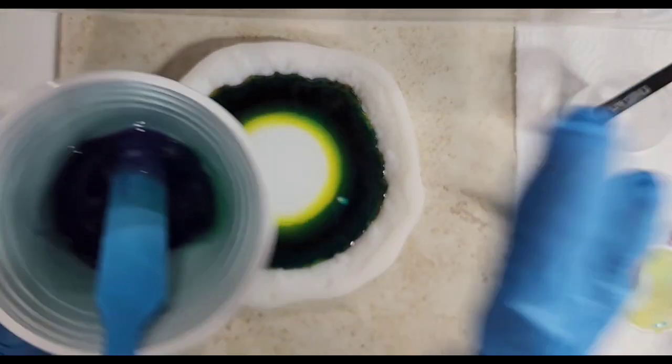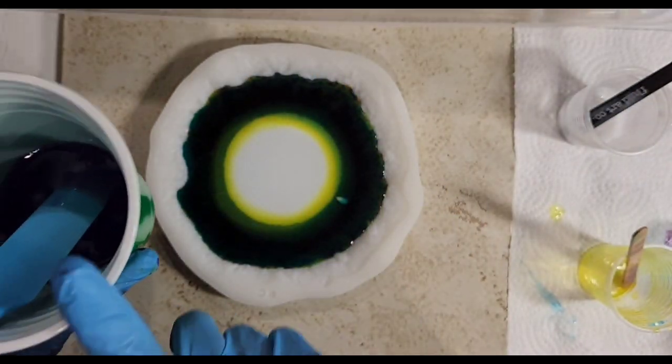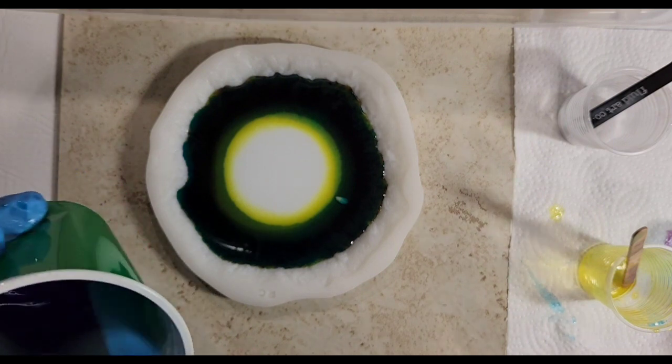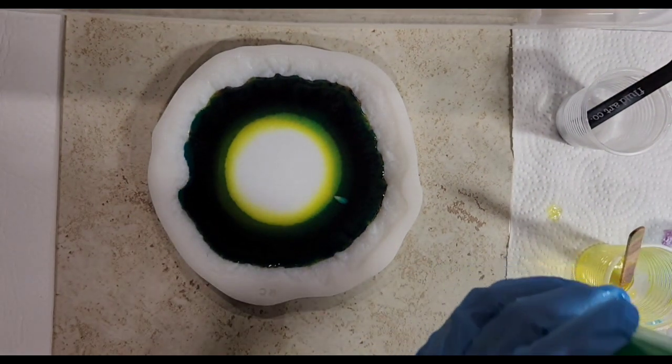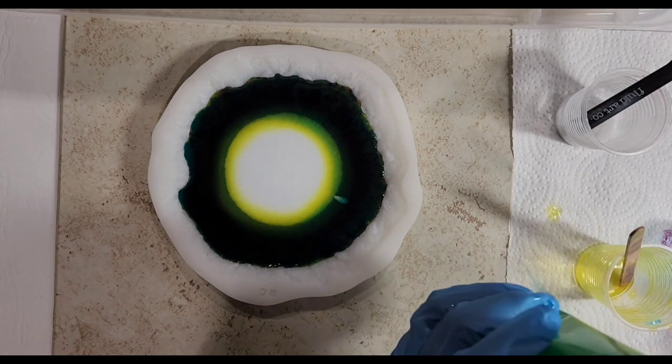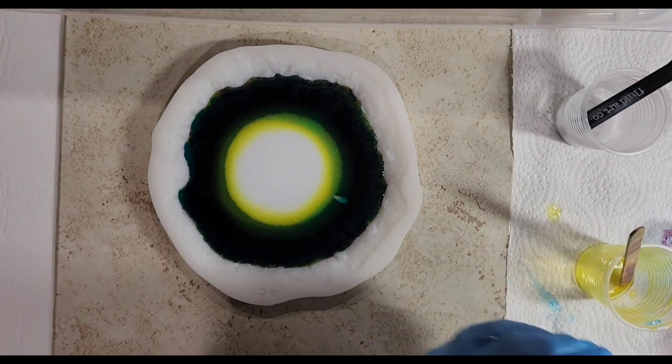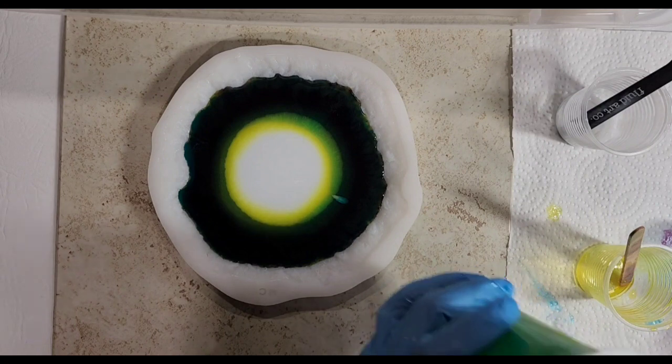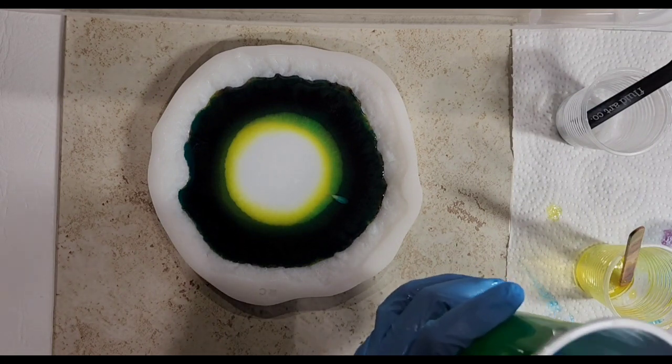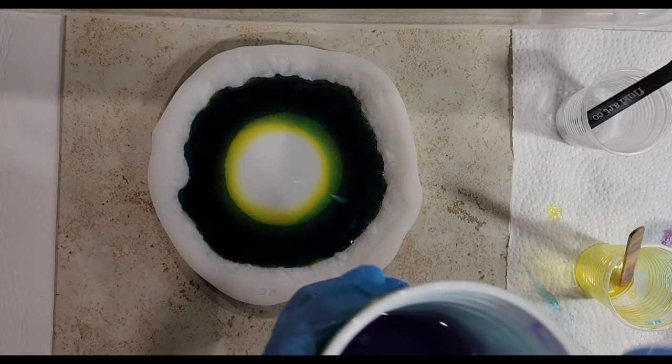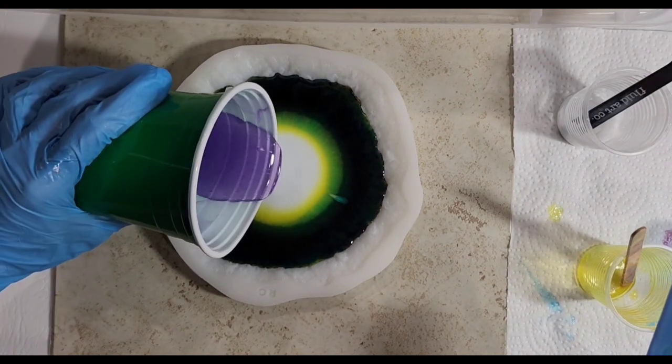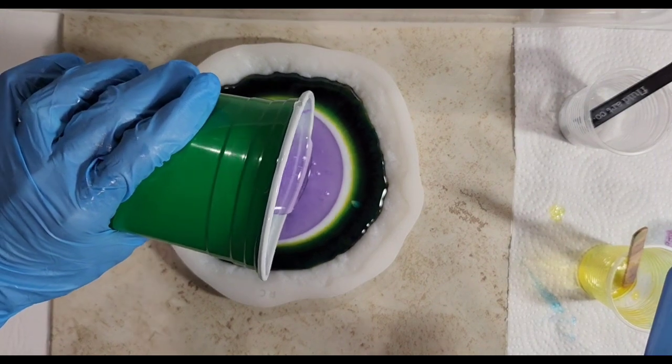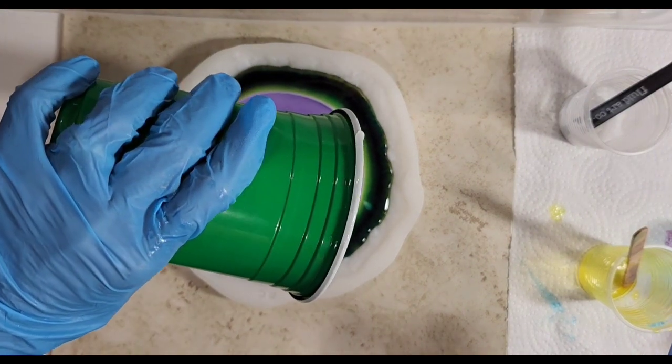Okay, then you take clear, and I put in dioxazine violet in here for my push. It's called a push, and it's very little that you put in. Mixing it up some more. And then you just pour it in the center and let it go out.